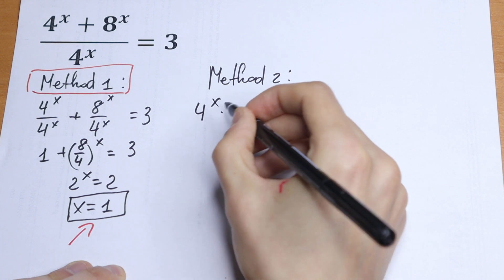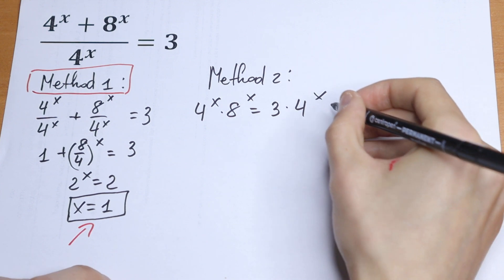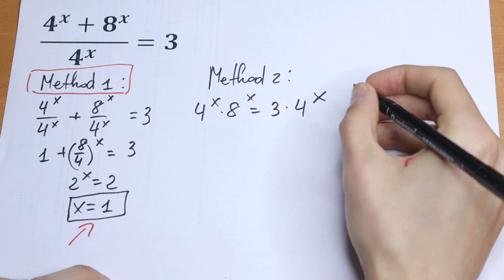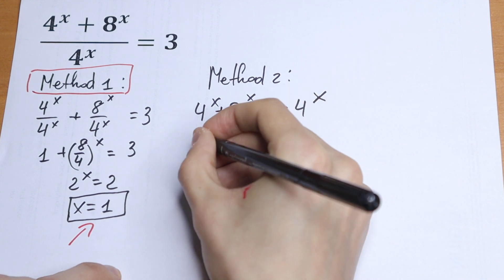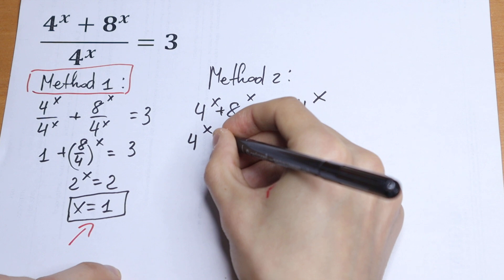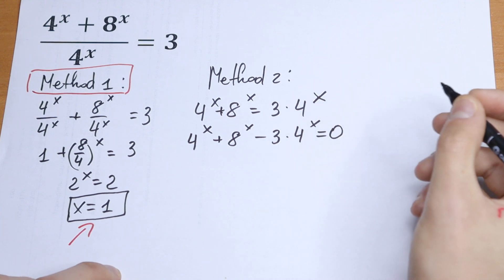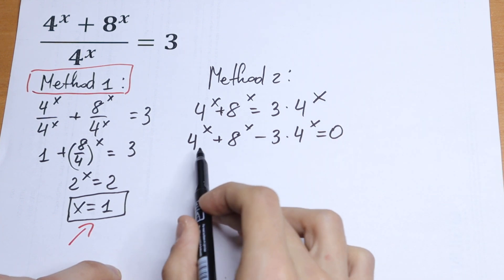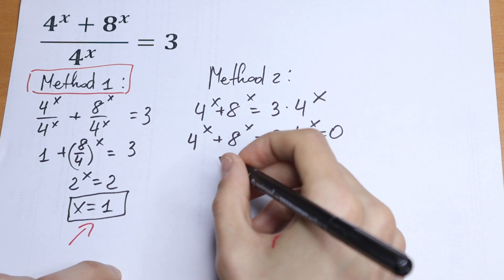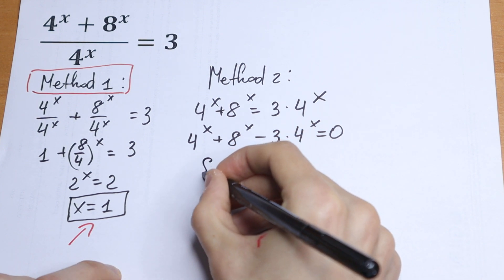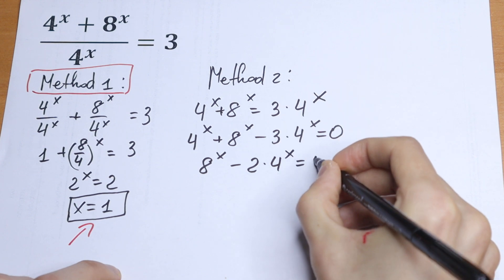Multiplying both sides by 4 to the power x gives us: 4 to the power x plus 8 to the power x equals 3 times 4 to the power x. Now we bring 3 times 4 to the power x to the left, so we have 4 to the power x plus 8 to the power x minus 3 times 4 to the power x equal to 0.